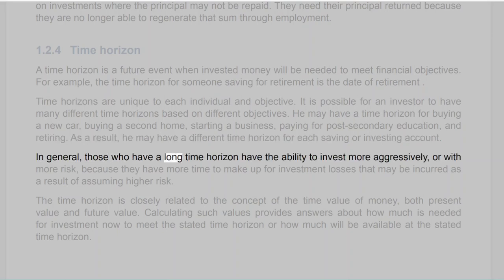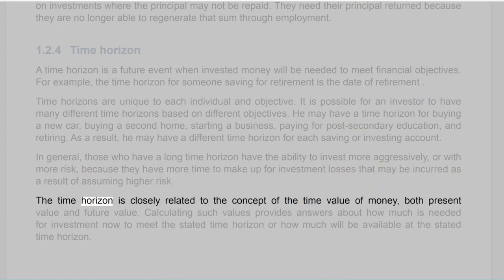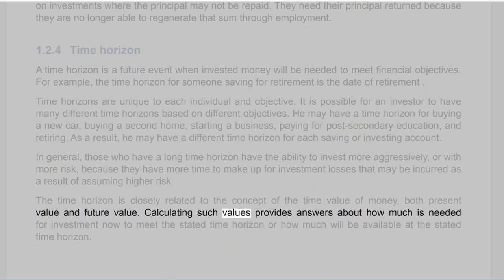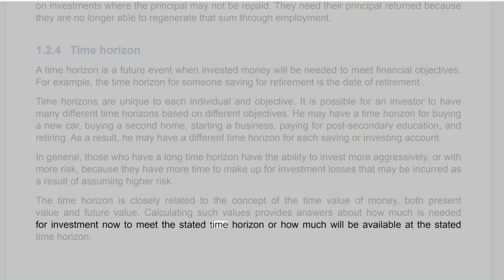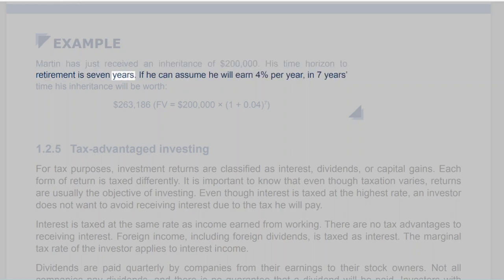In general, those with a long time horizon have the ability to invest more aggressively, or with more risk, because they have more time to make up for investment losses. The time horizon is closely related to the time value of money — both present value and future value. For example, Martin has just received an inheritance of $200,000, with a time horizon to retirement of 7 years. If he earns 4% per year, in 7 years his inheritance will be worth $263,186, calculated as FV = $200,000 × (1 + 0.04)^7.